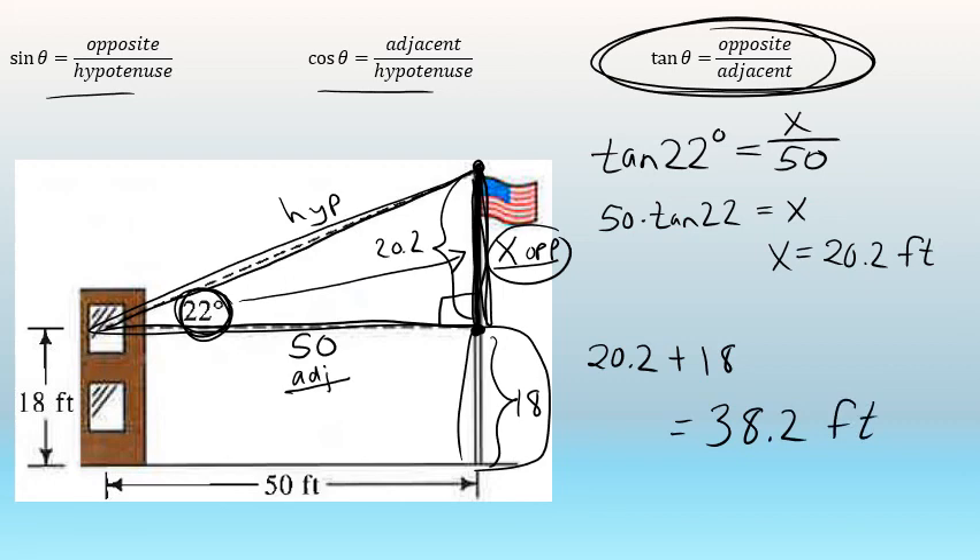This is not the length of the entire flagpole though, this is only the top of the flagpole. To find the complete measure of the flagpole, I'll have to take that 20.2 and add it to the 18, the bottom part of the flagpole, which is 38.2. The approximate length of the flagpole described in this situation is 38.2 feet.